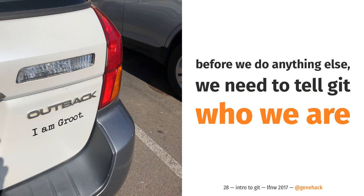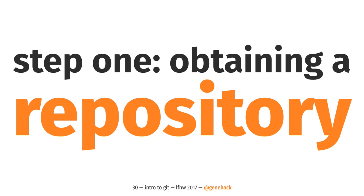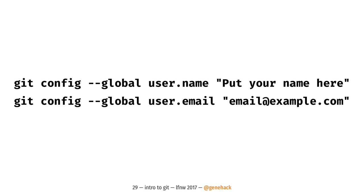Before we can do anything else with Git, we need to tell Git who we are. You need to run these two commands: 'git config --global user.name' and then your name, and 'git config --global user.email' and your email address. Git config is a command for modifying the configuration of Git. We're using the --global flag to tell Git we want to make these changes for everything we do with Git on this machine. This information is needed because once we start making changes, Git is going to track who made what change and when. If you don't tell it who you are, it will guess — and Git is kind of stupid and will guess wrong 99% of the time. And if it can't guess, it will refuse to work. So it's stupid and obstinate, which is going to kind of be a theme.